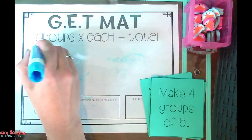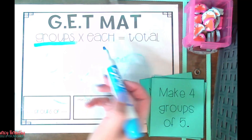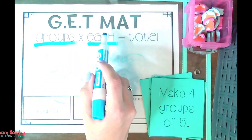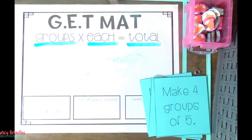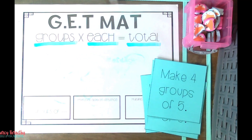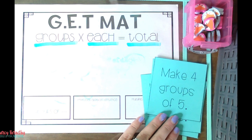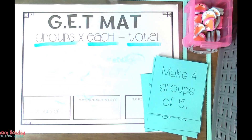So GET stands for: G is groups, E is each, and T is total — groups times each equals total. When you are first introducing this concept, more than likely you are going to have students practice making equal groups. I have just a simple set of task cards, and it might say make blank groups of blank. That is how we begin starting practice with this strategy.